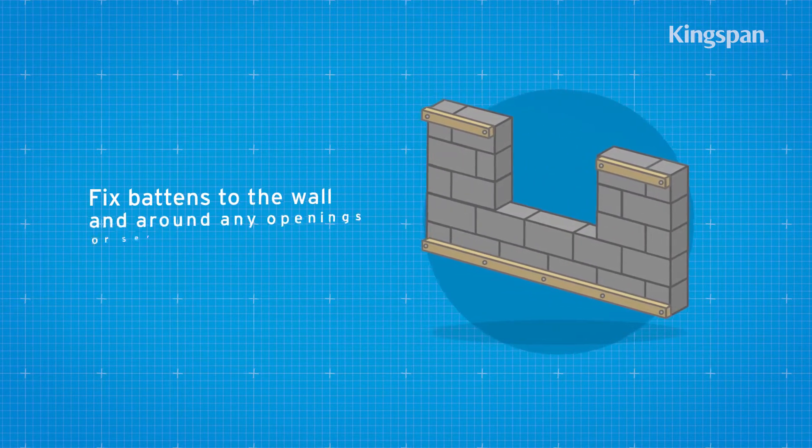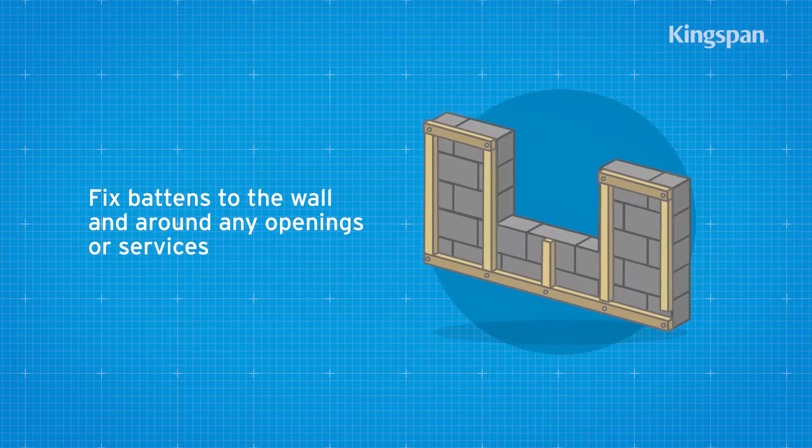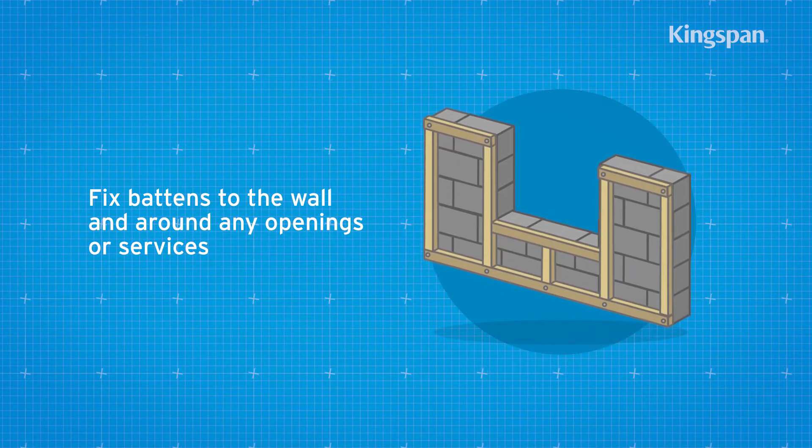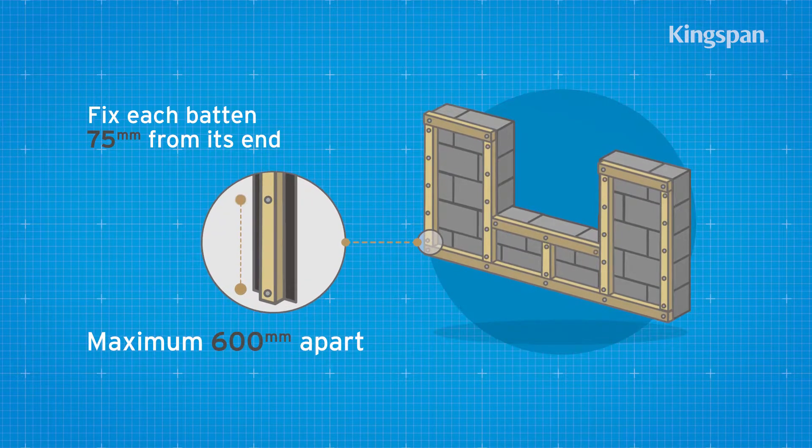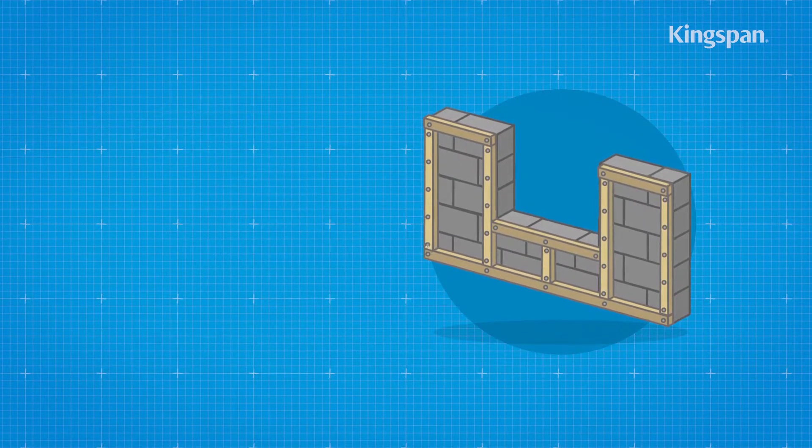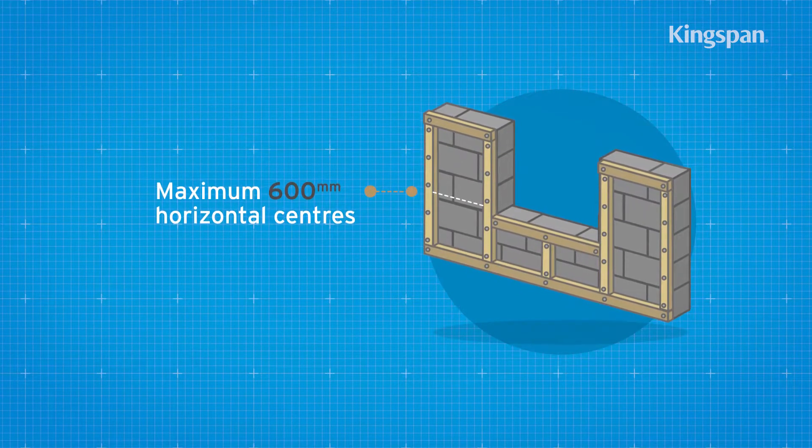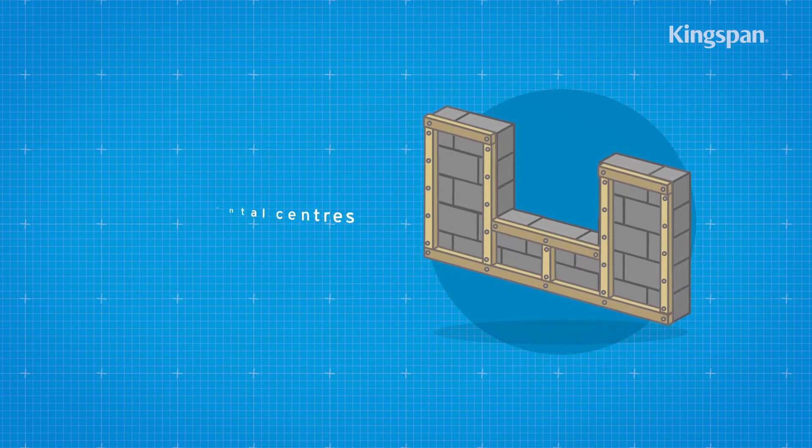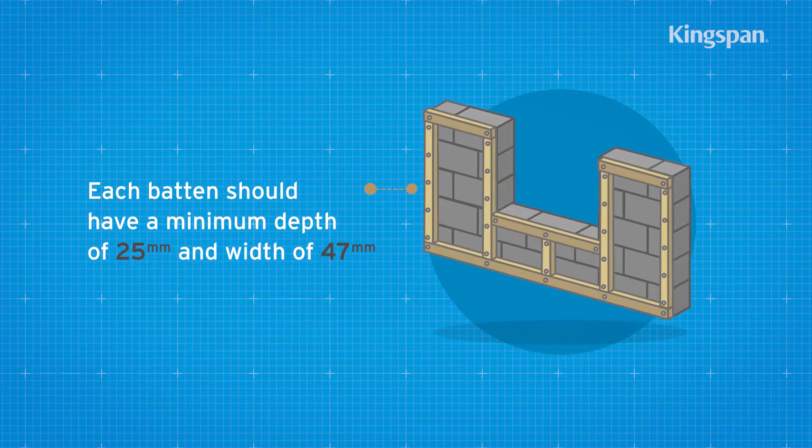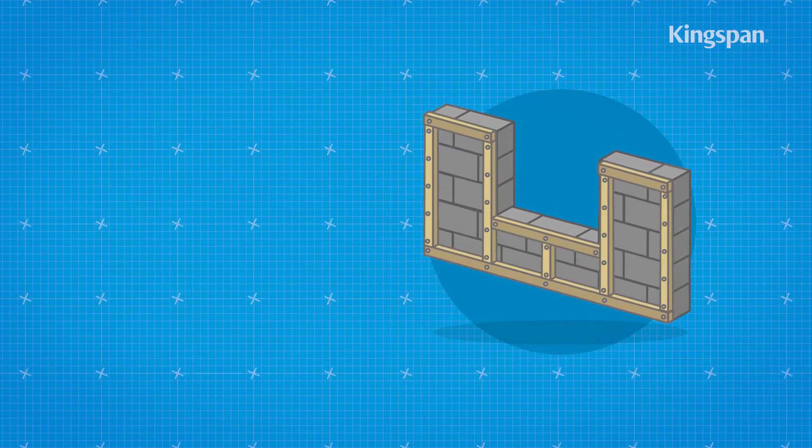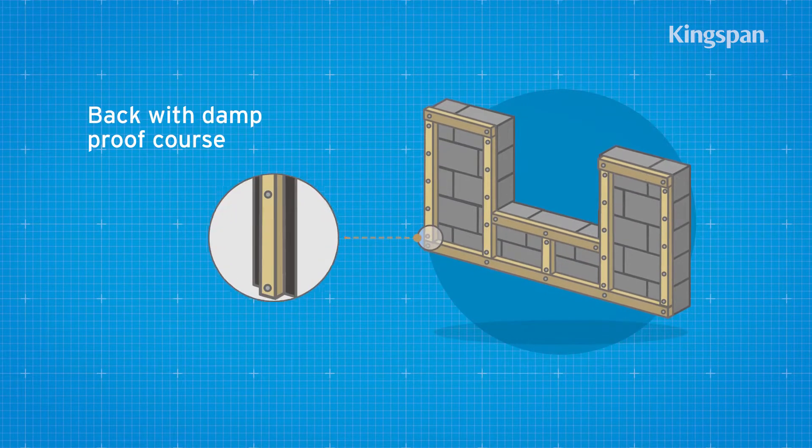Then fix further battens to the wall and around any openings or services. Fix each batten approximately 75mm from its end at no more than 600mm horizontal centres. Each batten should be treated softwood and backed with a strip of damp proof course.